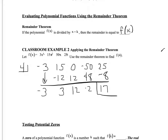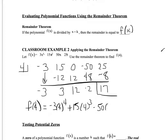Double-check this with your calculator — plug in 4 for x: negative 3 times 4 to the 4th, plus 15 times 4 to the 3rd, minus 50 times 4, plus 25. If you clean all that up, you get 17. This is an awesome tool because even without a calculator you can quickly and effectively evaluate polynomials for a particular value. The remainder will always equal the function value.